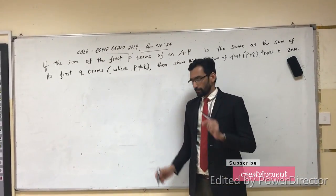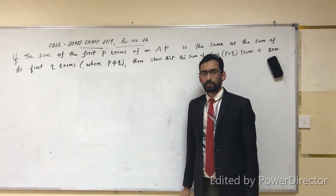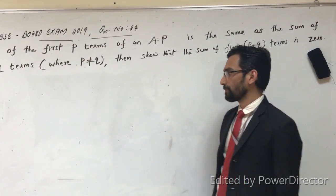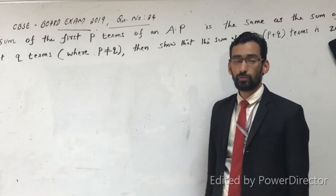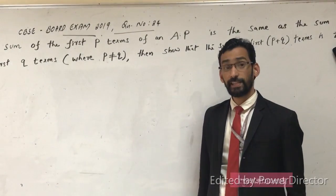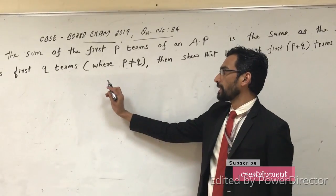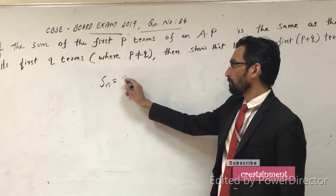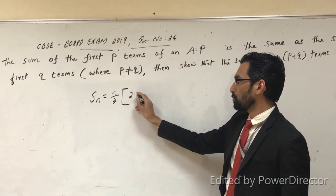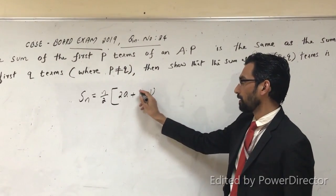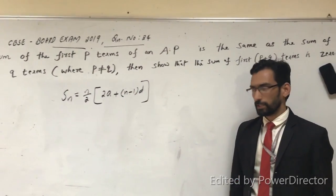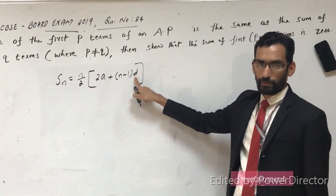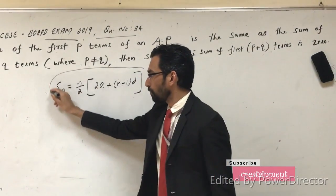For doing this question, first of all you must know one of the equations from this chapter. The sum of N terms of an AP — the first N terms — is denoted as Sn, where Sn equals N by 2 into 2a plus N minus 1 into d. Here, 'a' is the first term and 'd' is the common difference.